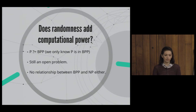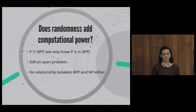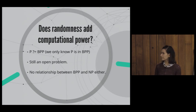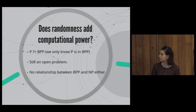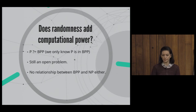We can now formalize our main question as: does P equal BPP? That is, are there problems solvable in polynomial time by a probabilistic algorithm but not by a deterministic one? Interestingly, we have absolutely no knowledge about the relationship between BPP and NP — no known inclusion in either direction — which makes determining whether P equals BPP even harder.